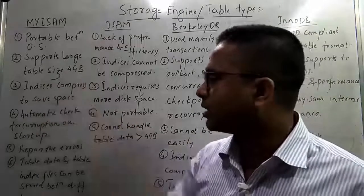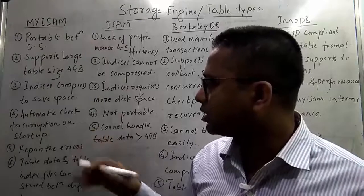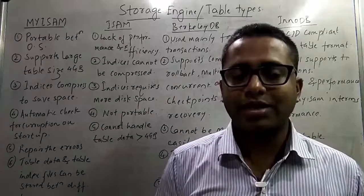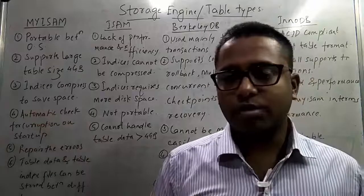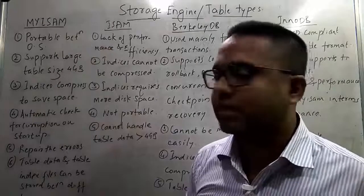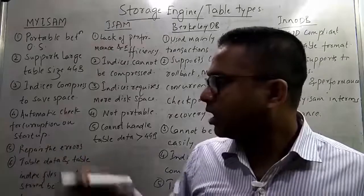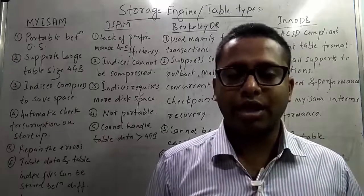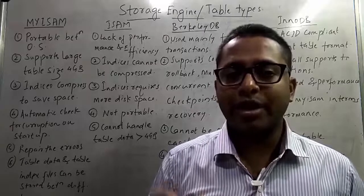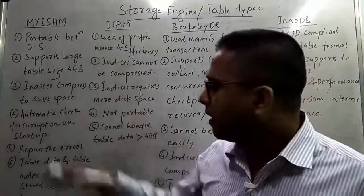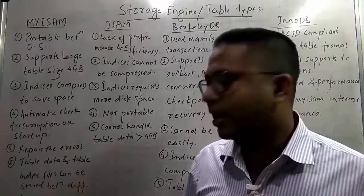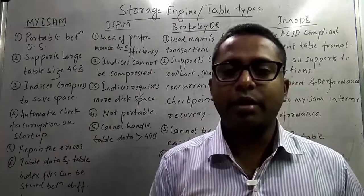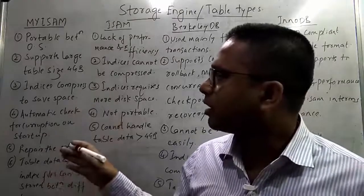The fourth feature of MyISAM is automatic check for corruption on startup. If anything goes wrong at startup time, it will automatically check for corruption or errors and fix them. If crashes or any corruption happens to your data, MyISAM will automatically check and repair those errors. The fifth feature is that table data and table index files can be stored in different locations, allowing you to move your table data and files between multiple locations.